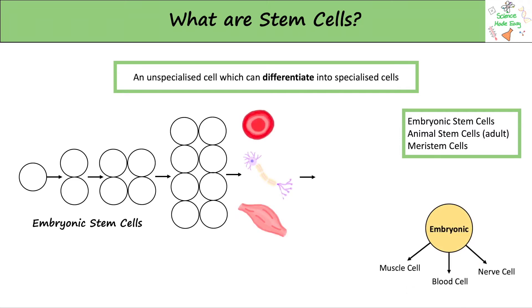For example, they could turn into blood cells, nerve cells, or muscle cells. Over time, these specialised cells come together to form tissues, organs, and then a human baby.